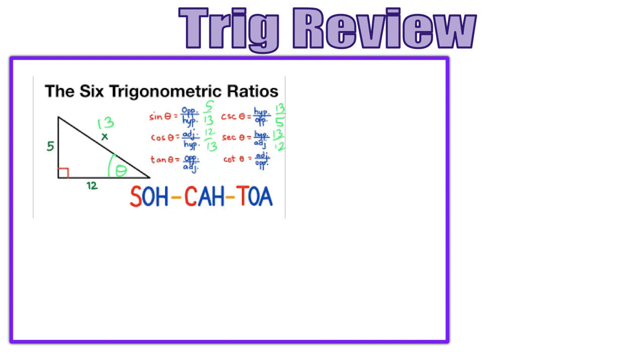That was something that helped me remember if sine goes with secant or cosecant, for whatever reason. And then tangent is going to be 5 over 12, which means its reciprocal function, cotangent, is going to be 12 over 5. So this is a little review of SOHCAHTOA, or the six trig ratios from a right triangle.